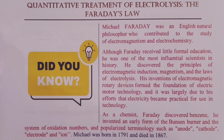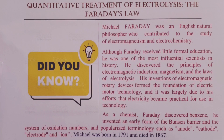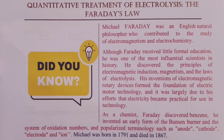When it comes to chemistry, Faraday discovered benzene. He also invented an early form of the Bunsen burner before it was improved much later. He also discovered the system of oxidation states, and we owe terminologies such as the anode, the cathode, the electrode, and the ion to Michael Faraday. This great chemist was born in 1791 and died in 1867.